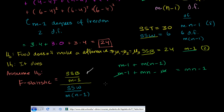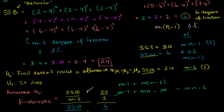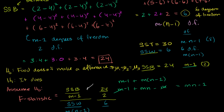Let's calculate it for this case. Our sum of squares between was 24, with 2 degrees of freedom. Our sum of squares within was 6, with 6 degrees of freedom. So this gives us 24 divided by 2, which is 12, divided by 6 divided by 6, which is 1. Our F statistic is equal to 12. The F stands for Fisher, the biologist and statistician who came up with this.